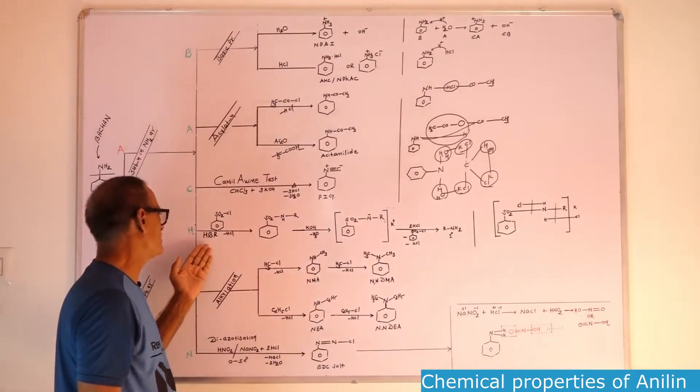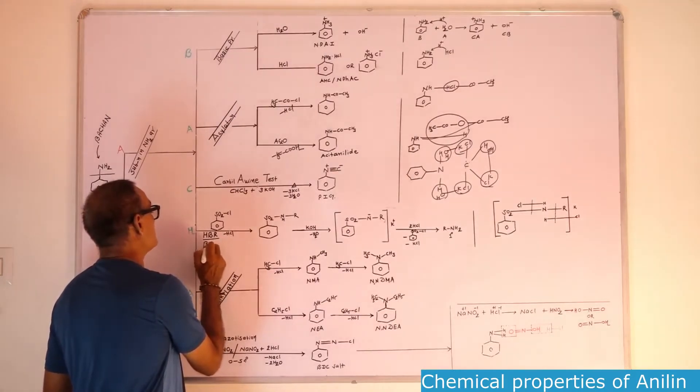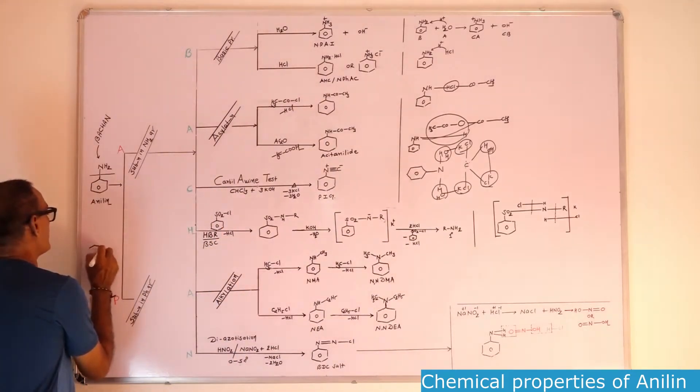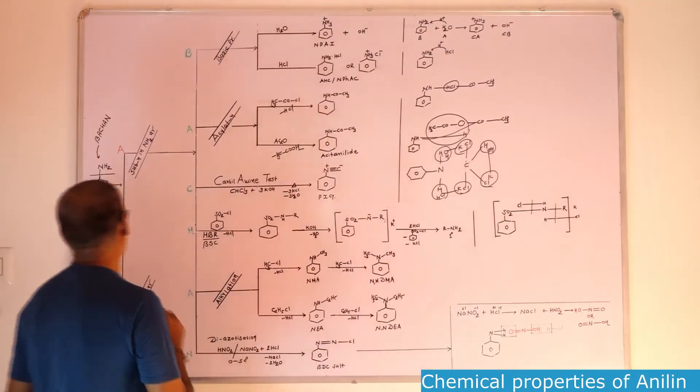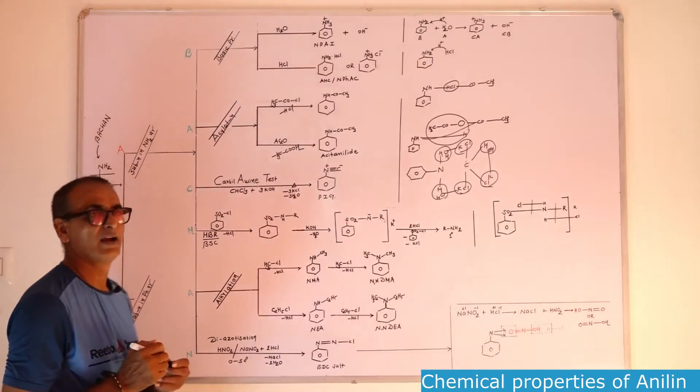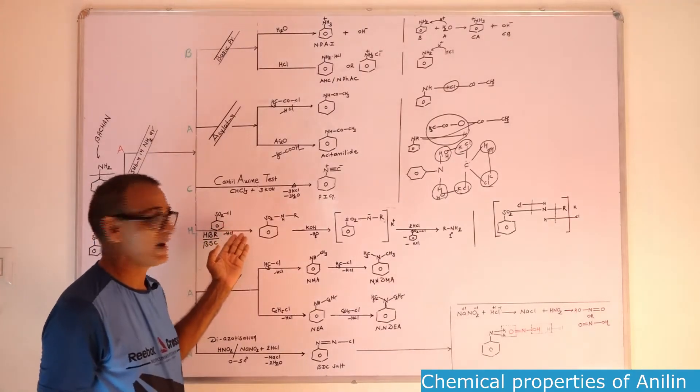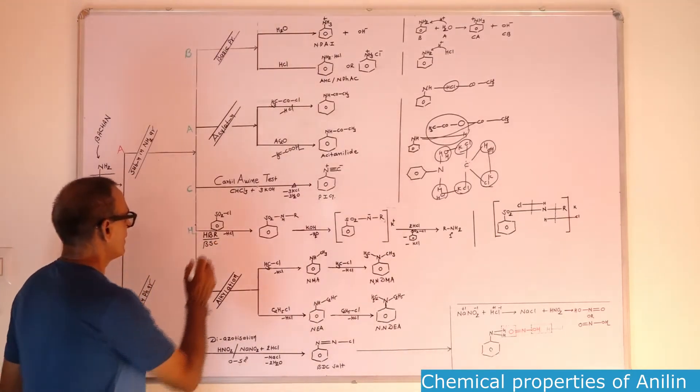Next one, reaction with Hinsberg reagent. This is Hinsberg reagent, its name is benzene sulfonyl chloride. It is the derivative of benzene sulfonic acid. Benzene having SO3H, you can write SO2 single bond OH. After removal of OH, this is benzene sulfonyl group. If you attach the chlorine atom with this one, it is known as benzene sulfonyl chloride. Benzene sulfonyl chloride, it is known as Hinsberg reagent.